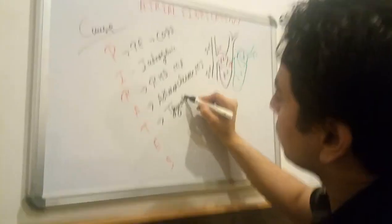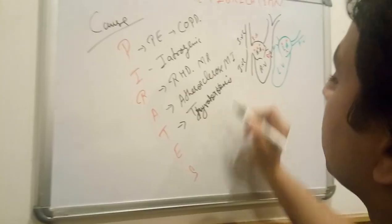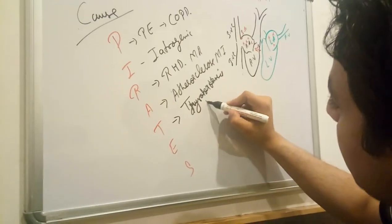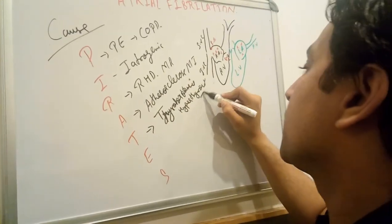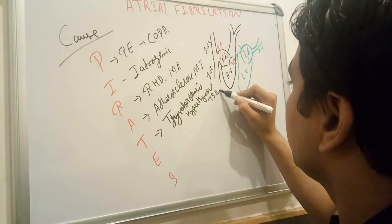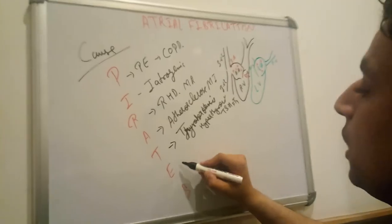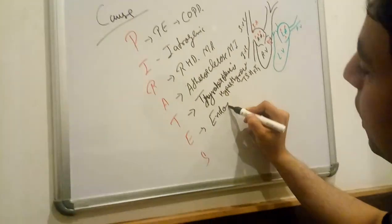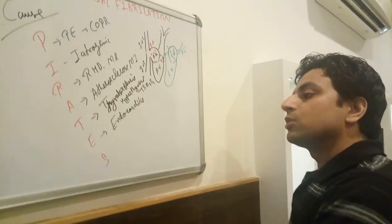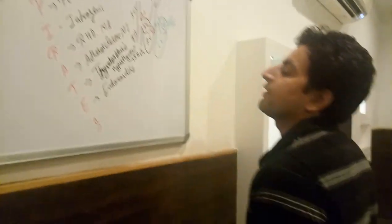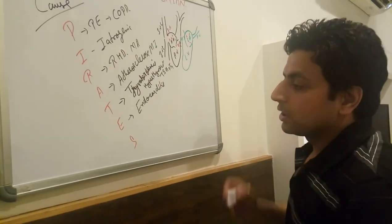Thyrotoxicosis, or hyperthyroidism, is a cause of atrial fibrillation — so we measure TSH and free T4. Ectopic beats can also arise from the pulmonary veins and in endocarditis, where the atrial walls are affected, causing atrial fibrillation.